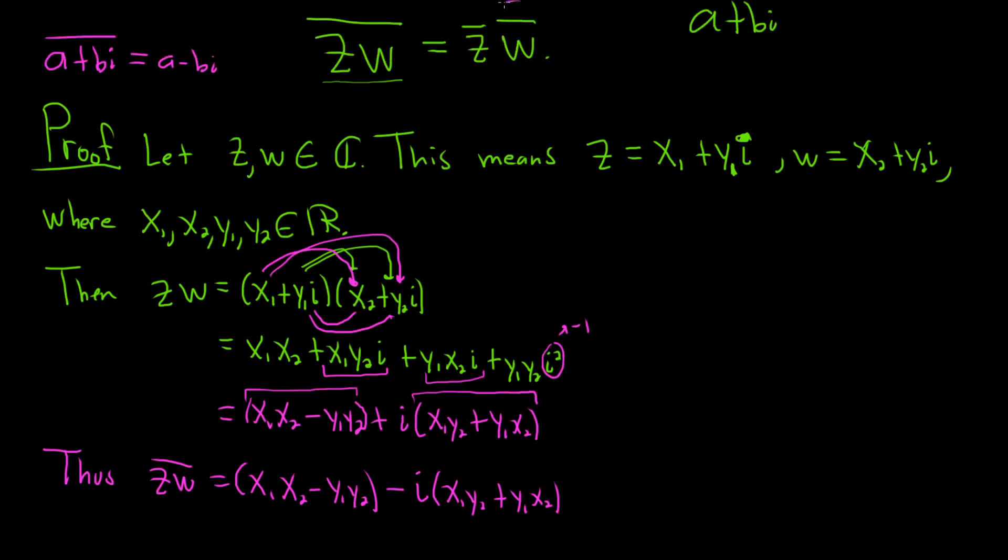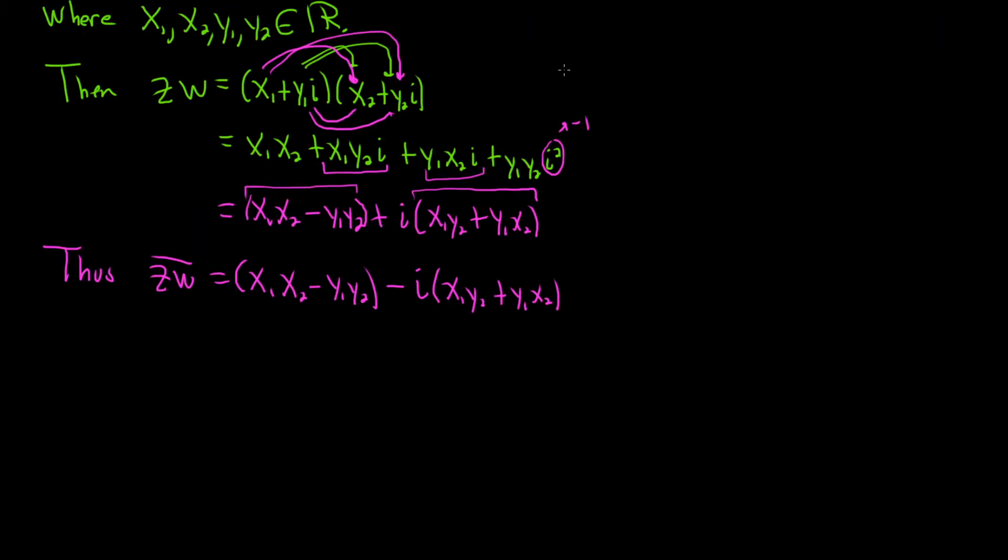So, now we have to look at the conjugate of z times the conjugate of w. Well, the conjugate of z is just going to be x1 minus y1i, because z has the plus. And the conjugate of w will just be x2 minus y2i. As before, we will distribute. So, let's see. x1 times x2. That's the first piece. And then x1 times negative y2i. So, that will be minus x1y2i. And then we'll distribute this piece here. So, minus y1x2i. And then this one times this one, the last one.